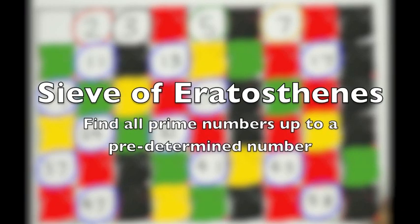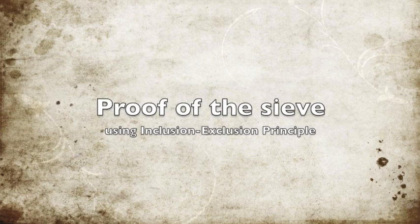So using such an algorithm, we are able to find out all prime numbers up to a predetermined number. But you can't take our word for it. Let us show you the proof. Proof is omitted.